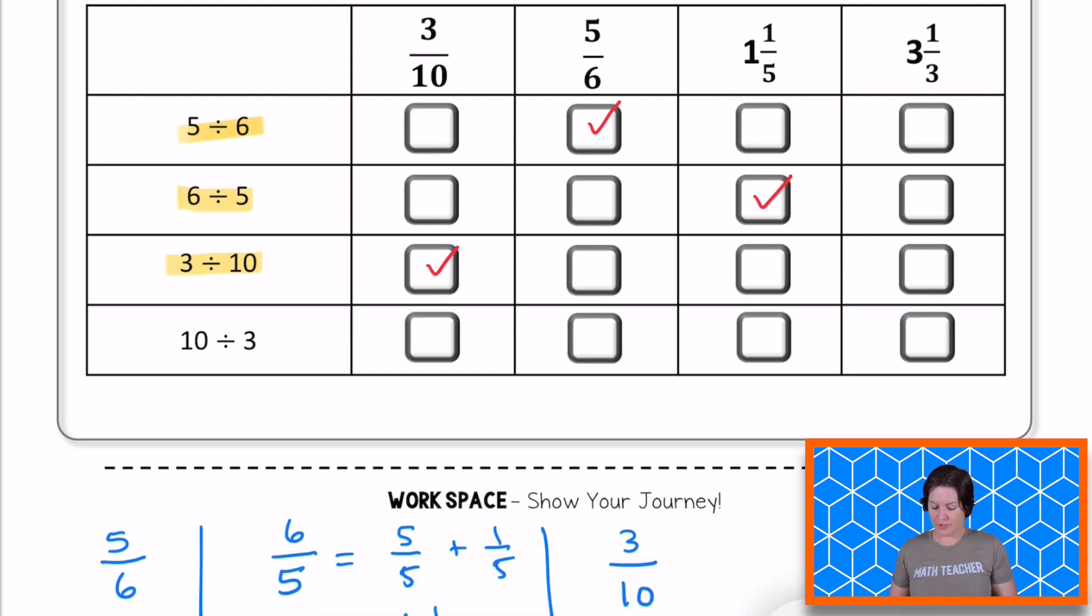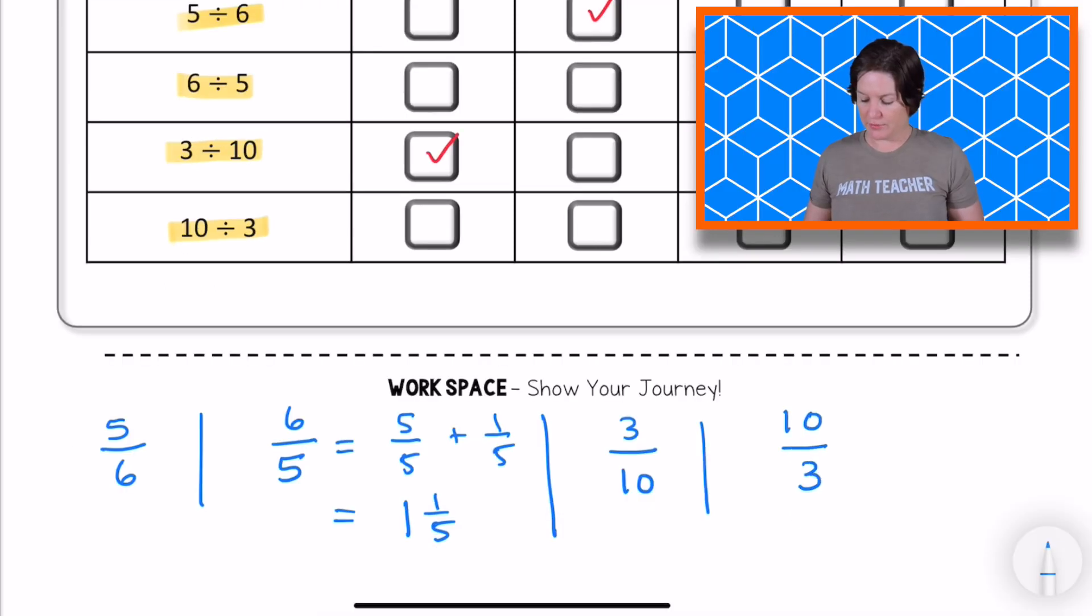And then we have our final division expression, 10 divided by three. Let's write that as a fraction, 10 divided by three. Now, do you see 10 thirds up there? I don't either, but I see three and one third, which I believe is equivalent, but I'm going to make sure that it is first.